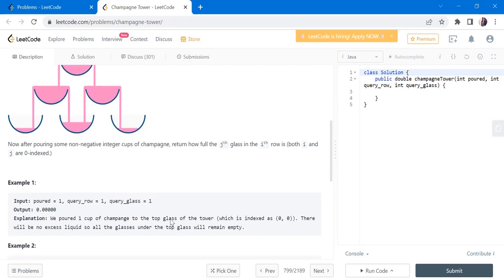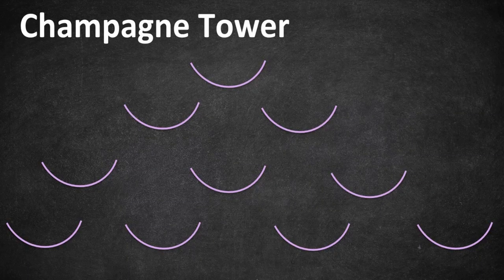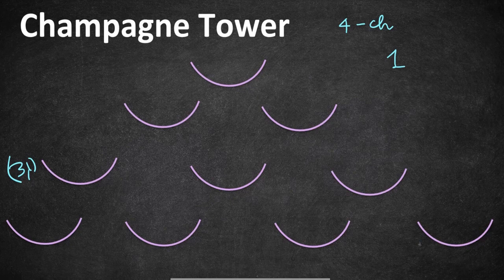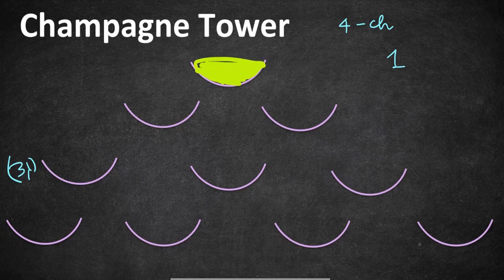Let's understand this with an example. We are going to pour four glasses of champagne and we have to return the amount of champagne in the third row, first glass. Starting by pouring one glass of champagne: the first glass at the top will be filled completely without any spill because one glass equals one unit of champagne, so it completely fills the quantity.